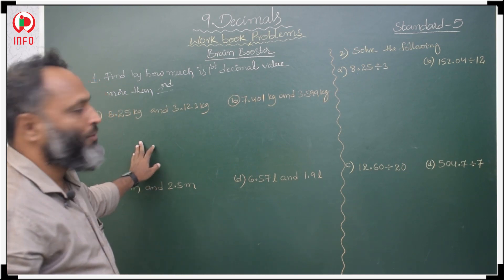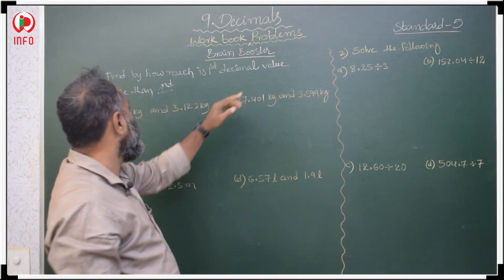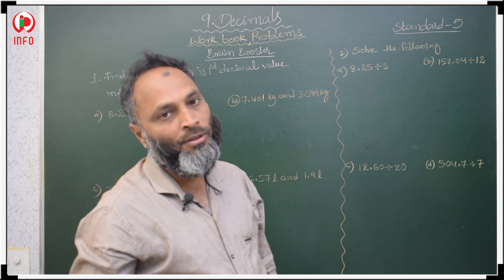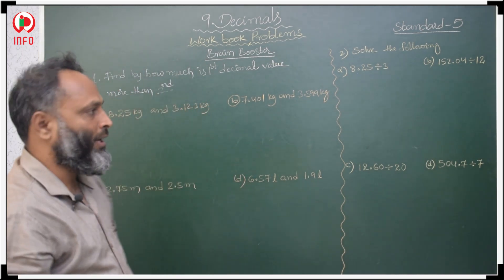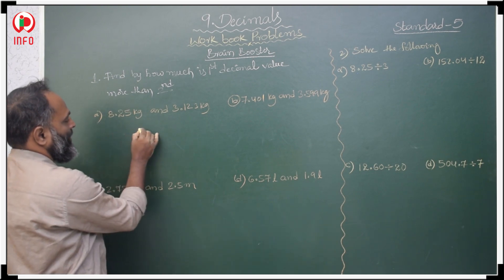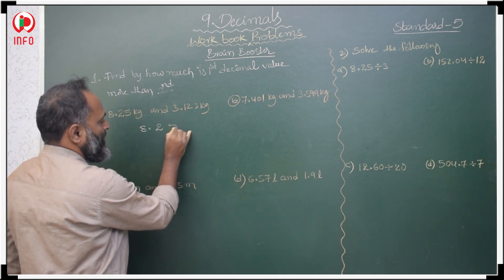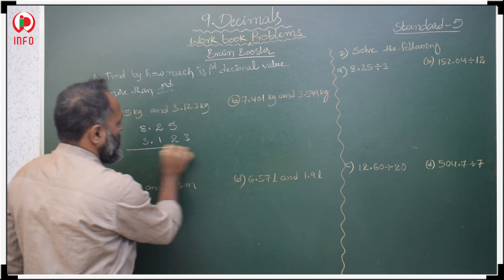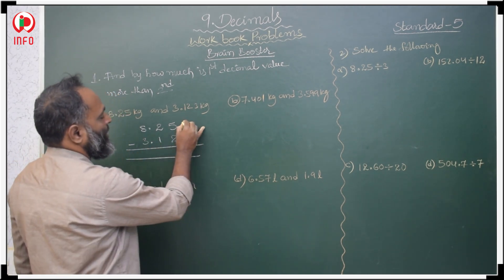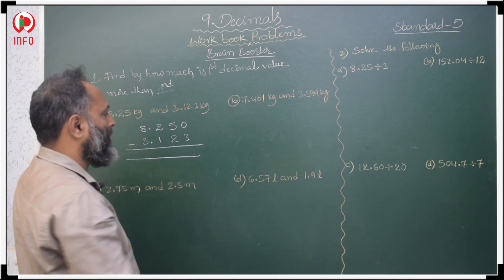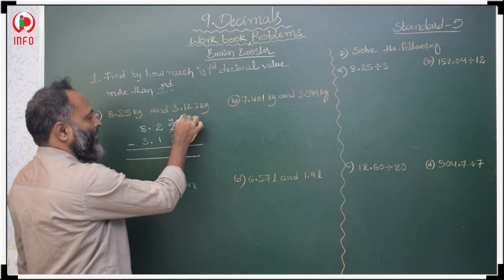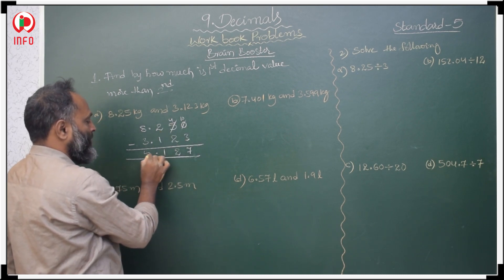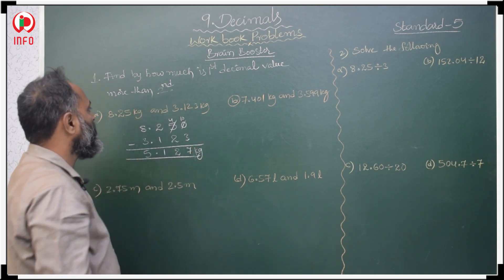Brain booster, first question: find how much the first decimal value is more than the second. It means we subtract the second value from the first. The first decimal value is 8.25 kg and from that we subtract 3.123. Here there is no thousandths place so we write 0. Taking a borrow: 10 minus 3 is 7; 4 minus 2 is 2; 2 minus 1 is 1; 8 minus 3 is 5. So 8.25 kg is 5.127 kg more.